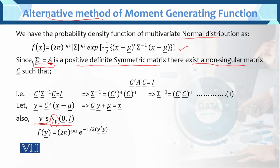There exists a non-singular matrix C, where C is the matrix of known values. So C transpose A C equals the identity matrix. We replaced A with sigma inverse. C equals identity. We know the value of sigma inverse. This is the C determinant: C prime inverse into C inverse. This is equation number one.